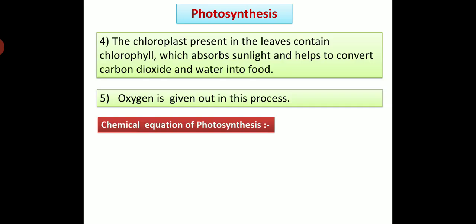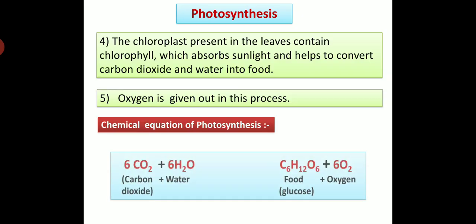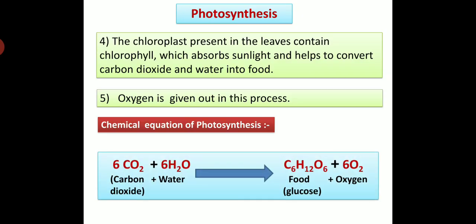Now we are going to see chemical equation of photosynthesis. In the process of photosynthesis, chemical equation is 6CO2 plus 6H2O in presence of sunlight and chlorophyll gives C6H12O6 plus 6O2. Means carbon dioxide plus water with help of sunlight and chlorophyll gives food means glucose and oxygen.